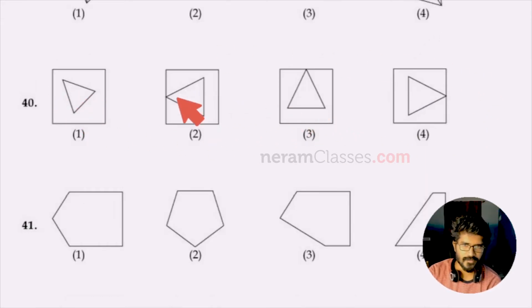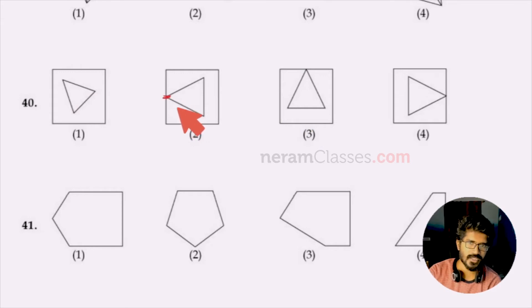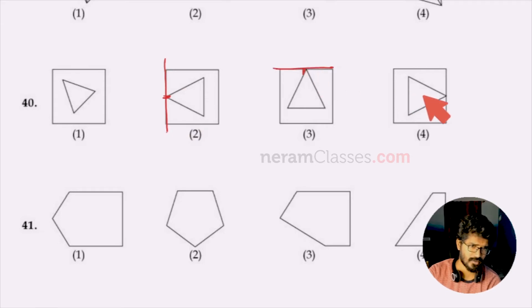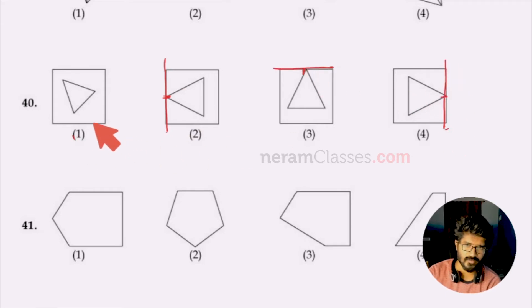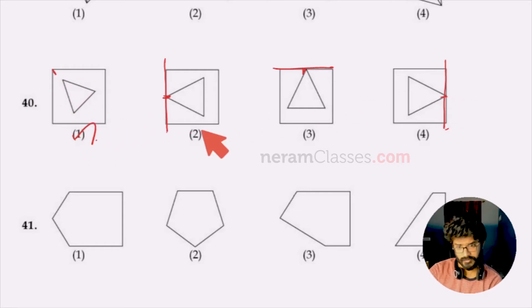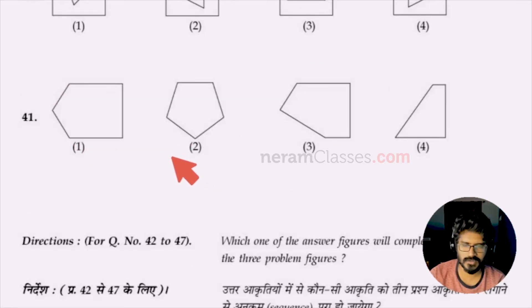For question 40, the top of the triangle is attached to one side of the outer square in options one, two, and three. But in the fourth option it is pointing towards the diagonal. So option four is the odd one among the four.